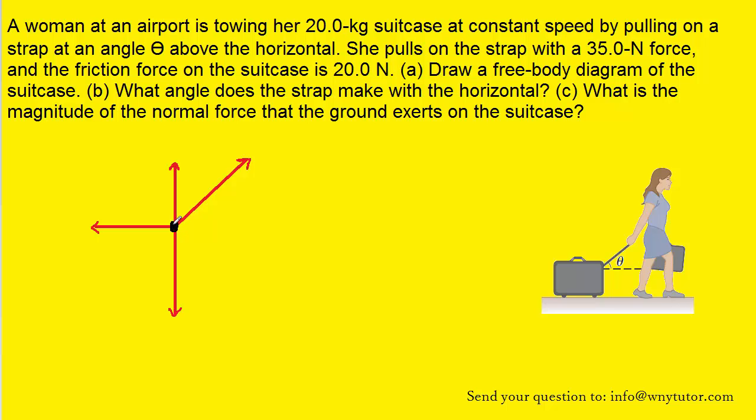Now the black dot in the center of the diagram represents the suitcase. Perhaps the most obvious force acting on the suitcase is the gravitational force, which acts downward. We can label that force mg.